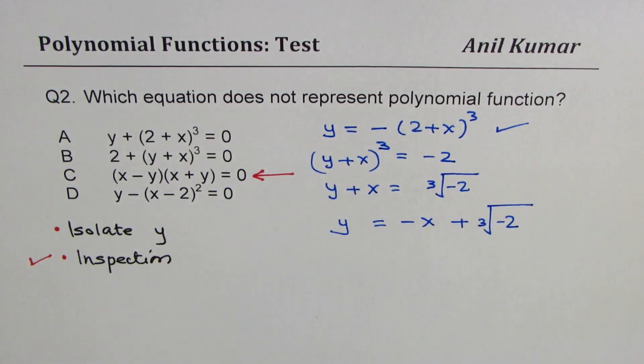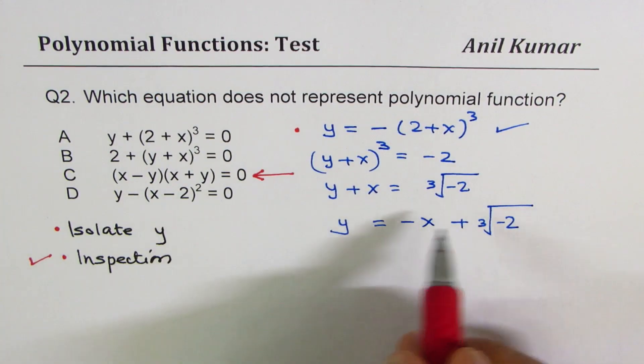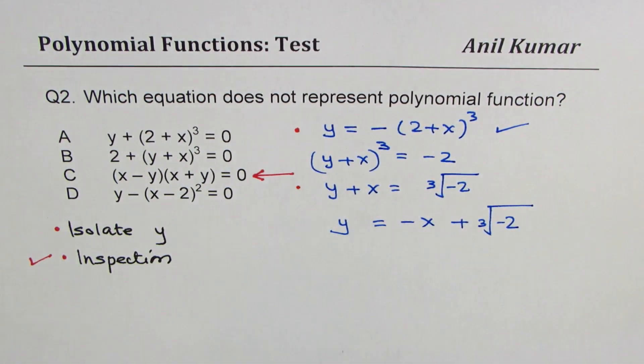I could write this as y equals to minus x plus cube root of minus 2. Now that is also a polynomial. So we did two of them. So both are polynomials.